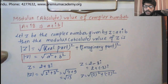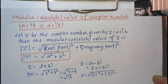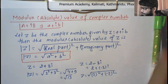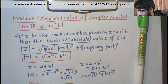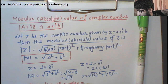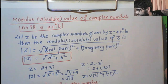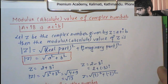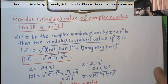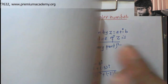Now we will look at the properties of modulus of a complex number. For A plus iB, the absolute value properties are important to understand. We need to keep this concept in mind before solving problems.